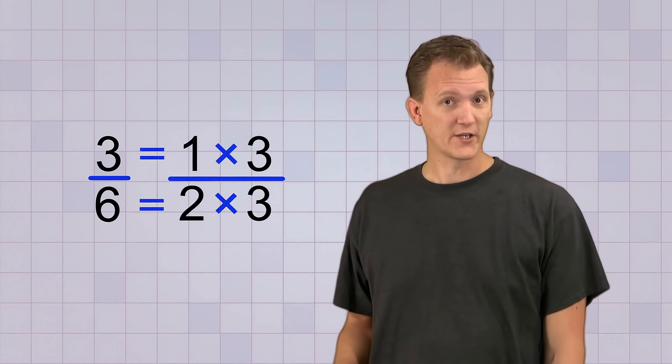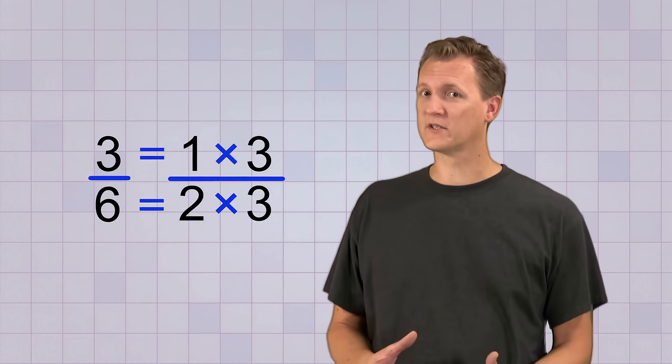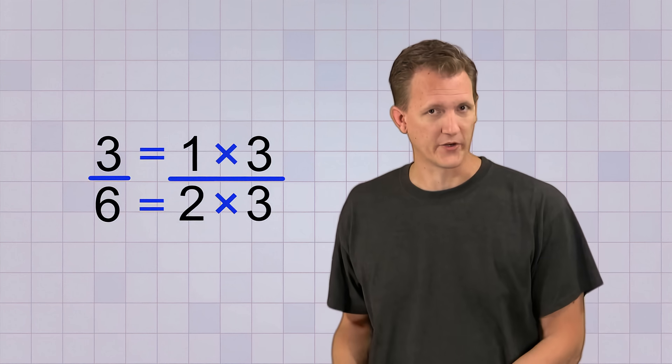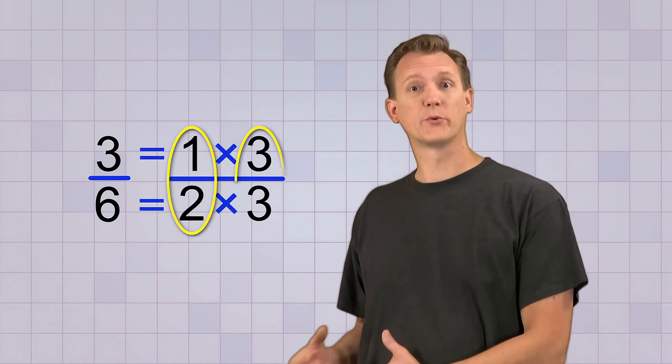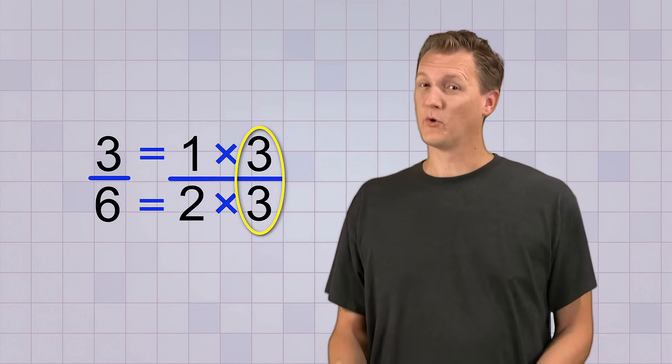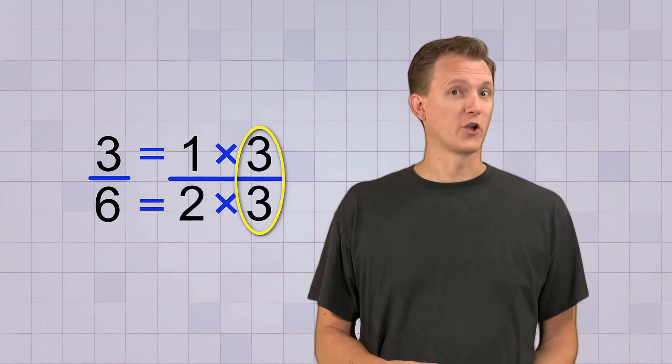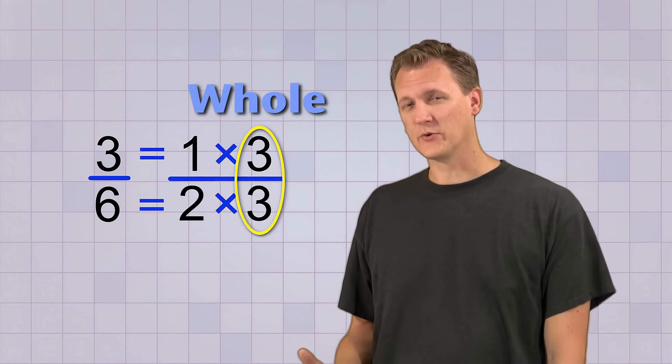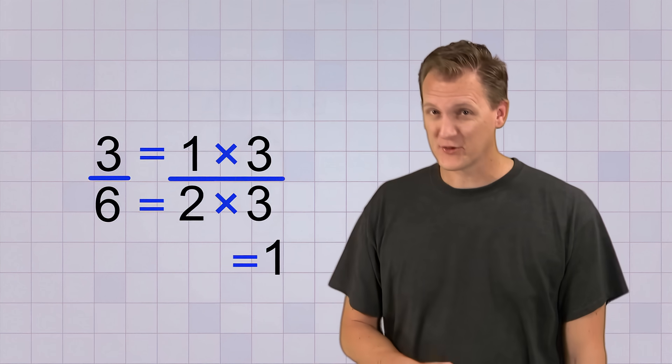There. We've rewritten our fraction using factoring, and now it kind of looks like two fractions being multiplied together. 1 over 2 times 3 over 3. Of course, 3 over 3 is what I like to call a whole fraction since its value is equal to 1.